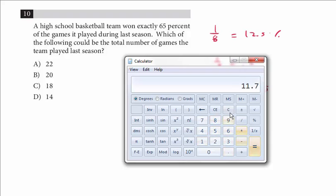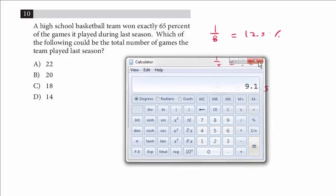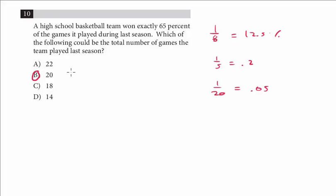All these other ones you can see don't work. .65 times 18 doesn't work. And 14 times .65. So the only one that's an integer is B. And the answer would be 13 games. But again, it's asking for the total number, and so the answer is B.